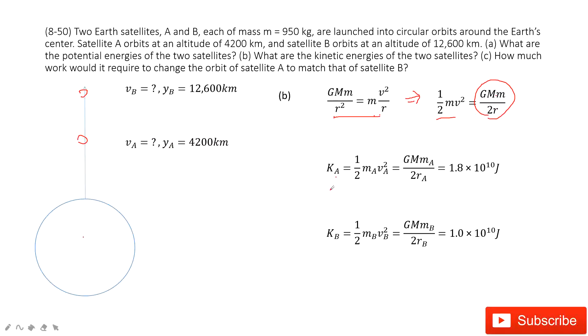So you can find kA. The kinetic energy for A is one-half mA vA squared. You input this function inside. You can see for this function all the quantities are known, so you can do the calculation easily.